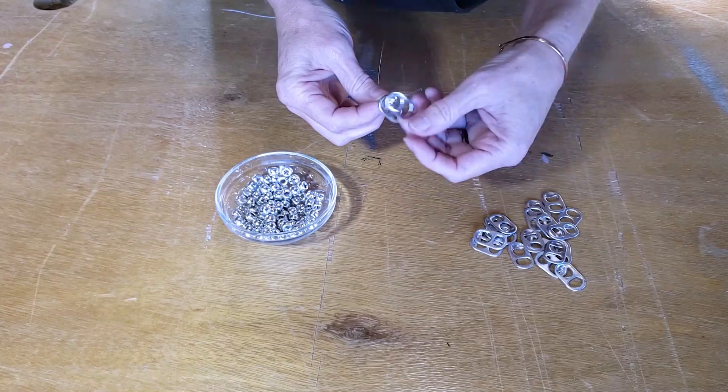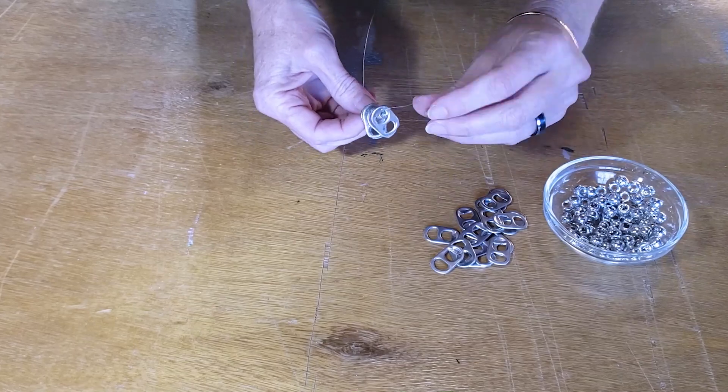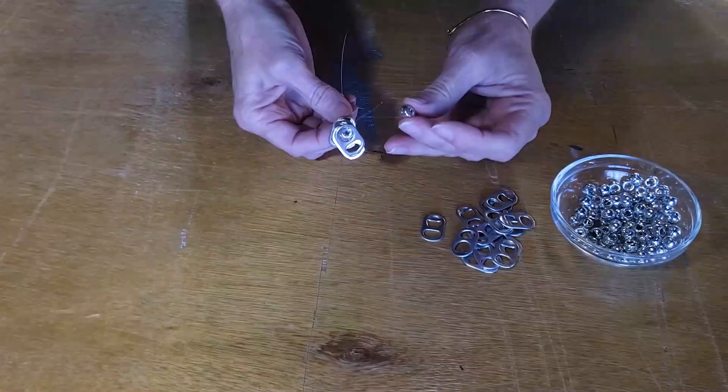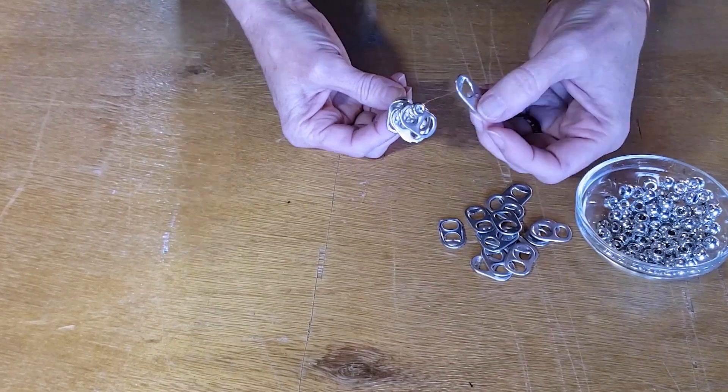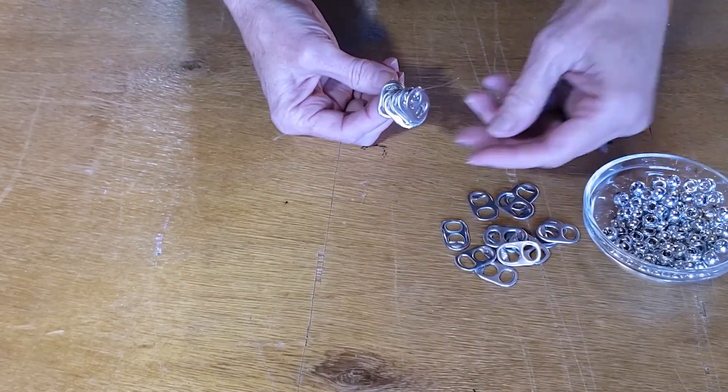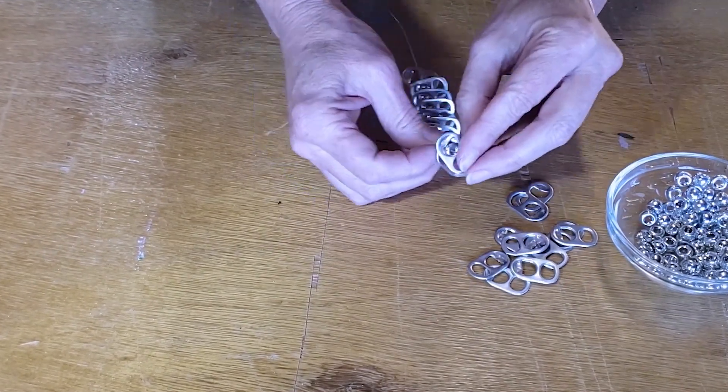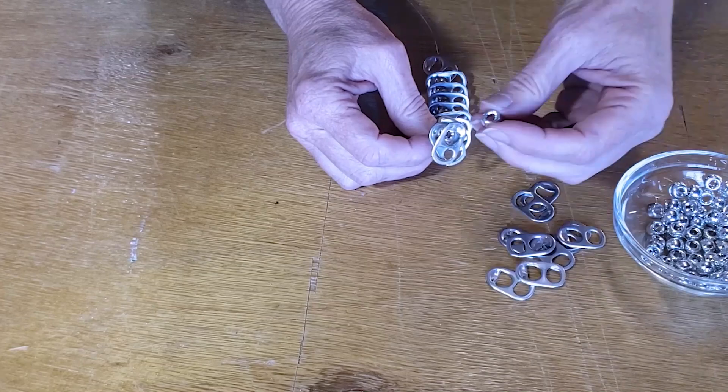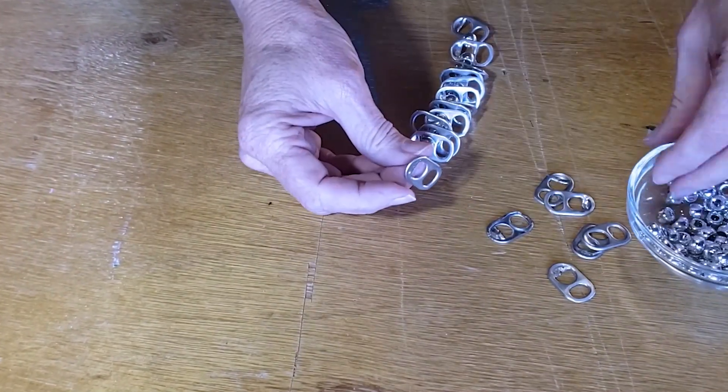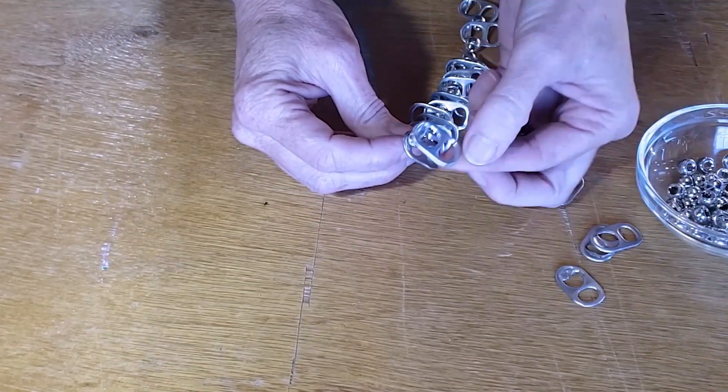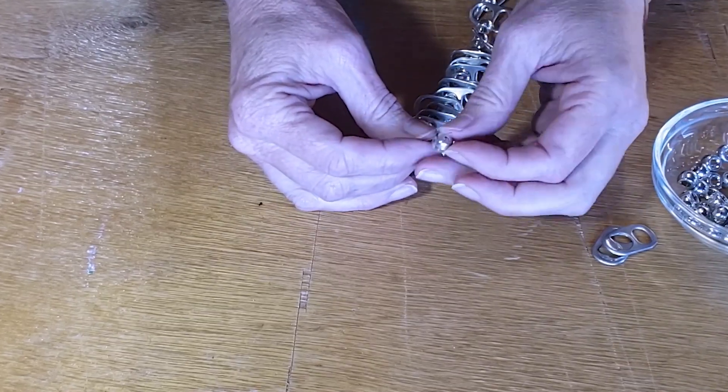You'll also need 20 pull tabs and 20 silver pony beads for each ornament and to start I'm just stringing one pull tab on and then alternating with the pony bead and going back to the pull tab and I'm stringing it through the larger end that is attached to the drink can. And I like to make sure that all my pull tabs are facing the same direction but if you don't you can still finish the ornament it'll work just fine as long as you string on all 20 pull tabs and all 20 pony beads.